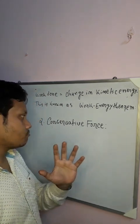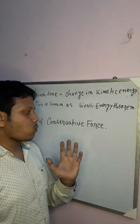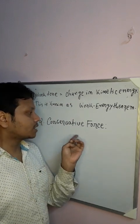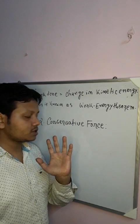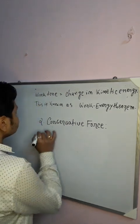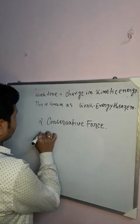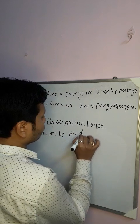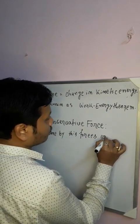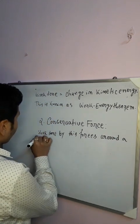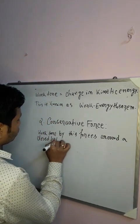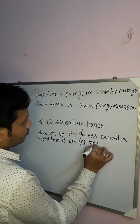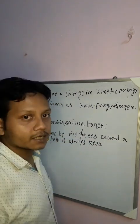We have heard the term conservative force before. So what is the general definition? It is a type of force where the work done by this force around a closed path is always zero. That is, work done by these forces around the closed path is always zero.